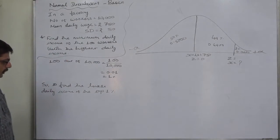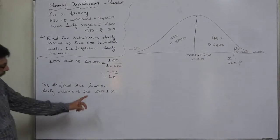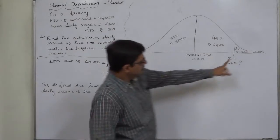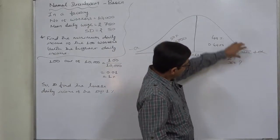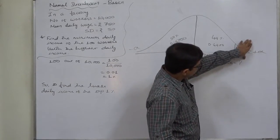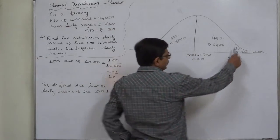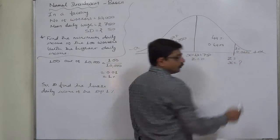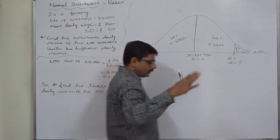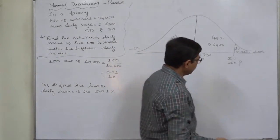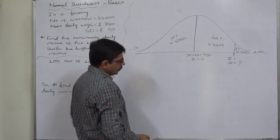The top 1% is on the extreme right-hand side of the normal curve. We are interested in this region—these are the 100 workers out of 10,000 who earn more than all other 9,900 workers.